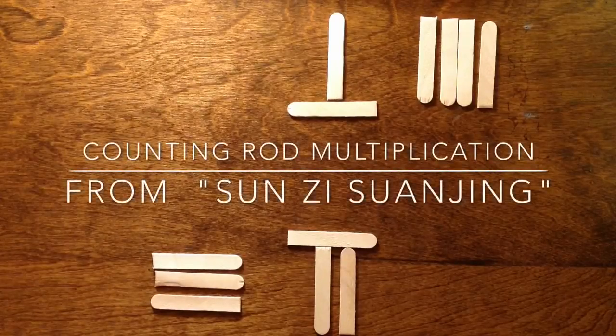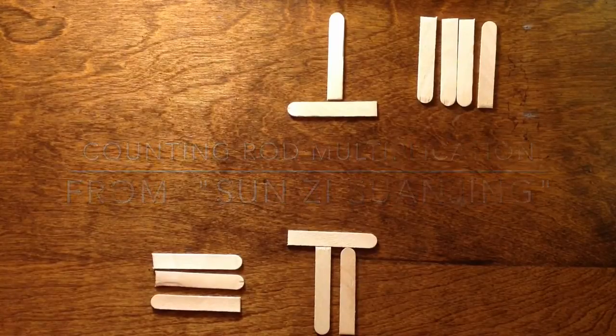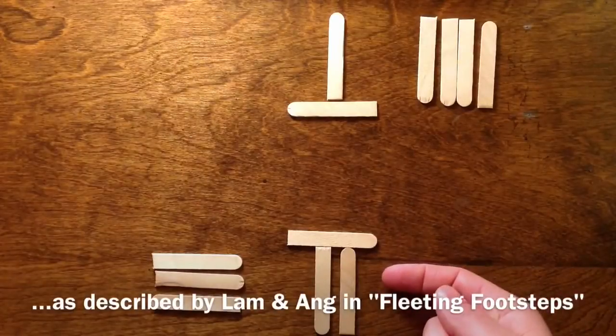Let's take a look at how we can multiply numbers using counting rods based on the methods described by Sun Z. I'd like to multiply sixty-four by thirty-seven.